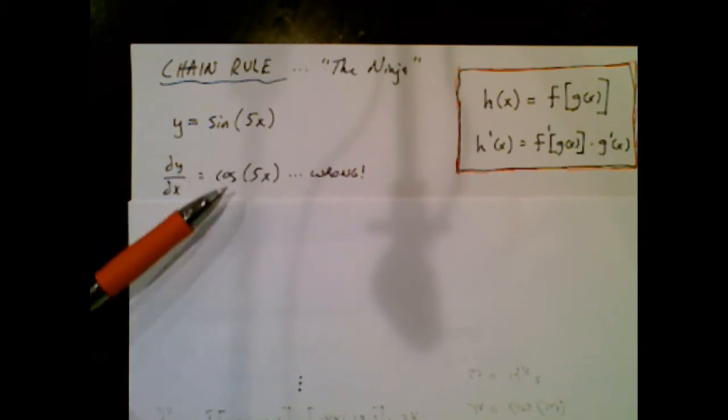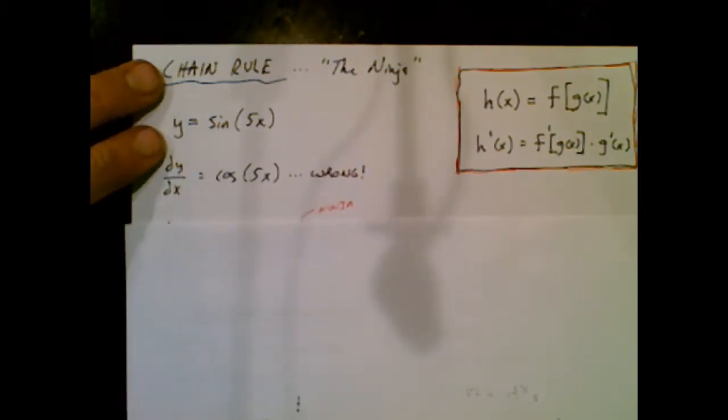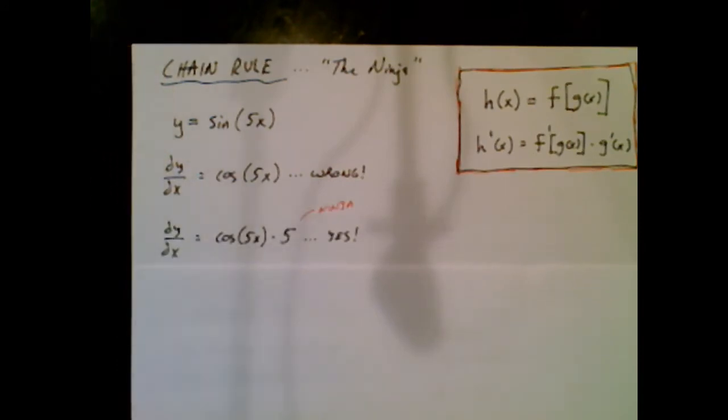in the heat of battle, they will write that, and they'll think they're correct, but they're wrong because they've been ninja'd. They forgot to include the times 5. So our job is to figure out why do we have this times 5?